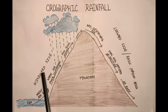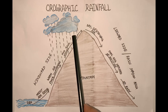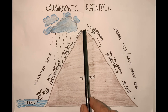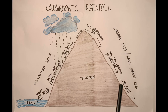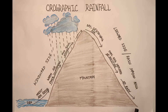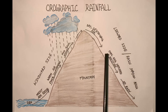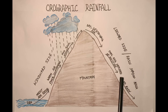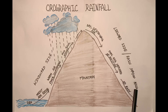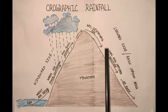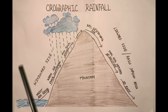The rainfall occurs on the windward side of the mountain. The air then starts descending down the other side of the mountain slope. This descending air is dry and cool with no moisture left, so there is no rainfall on this side of the mountain. This side is known as the leeward side, also called the rain shadow area, because it receives very little or no rainfall at all.